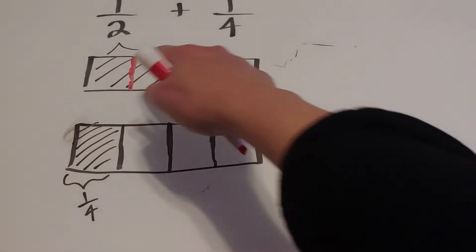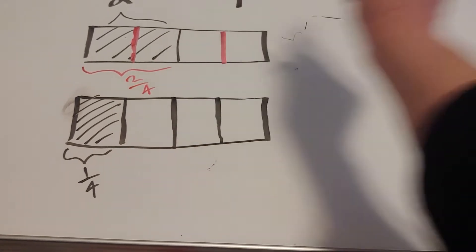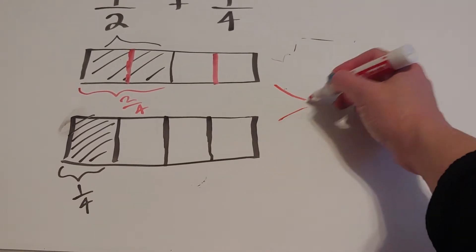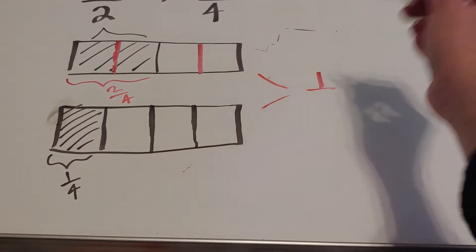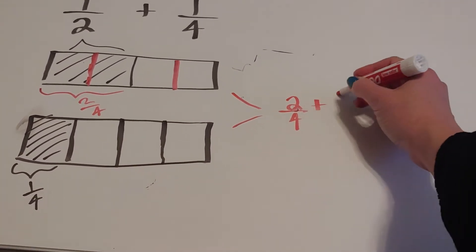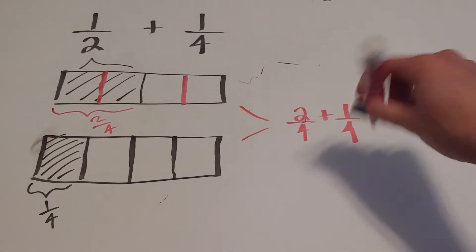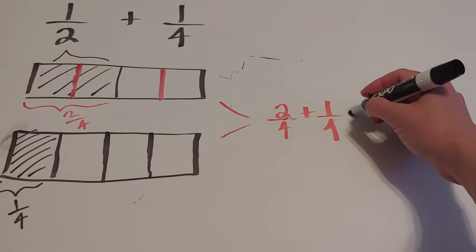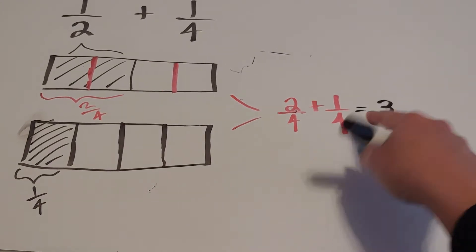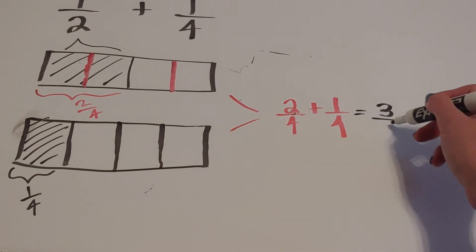So what that means is that one-half is equivalent to two-fourths. So now we're going to add them together. When I add one-half plus one-fourth, it's really two-fourths plus one-fourth. Now you think students would just know this is going to be three-fourths. But there's a problem — most fourth grade students are going to add four and four and write eight.